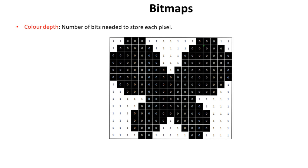Colour depth refers to the number of bits needed to store each pixel. Because this image is only using two discrete colours — white and black — we only have to use one single bit of colour depth to store the colour information for this image. A zero can indicate black and a one can indicate white.